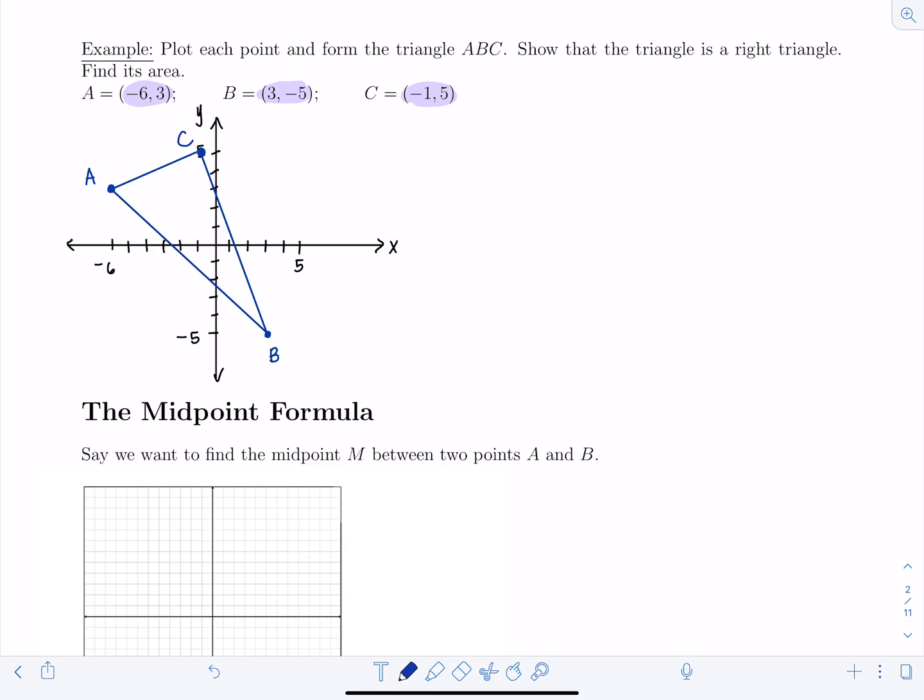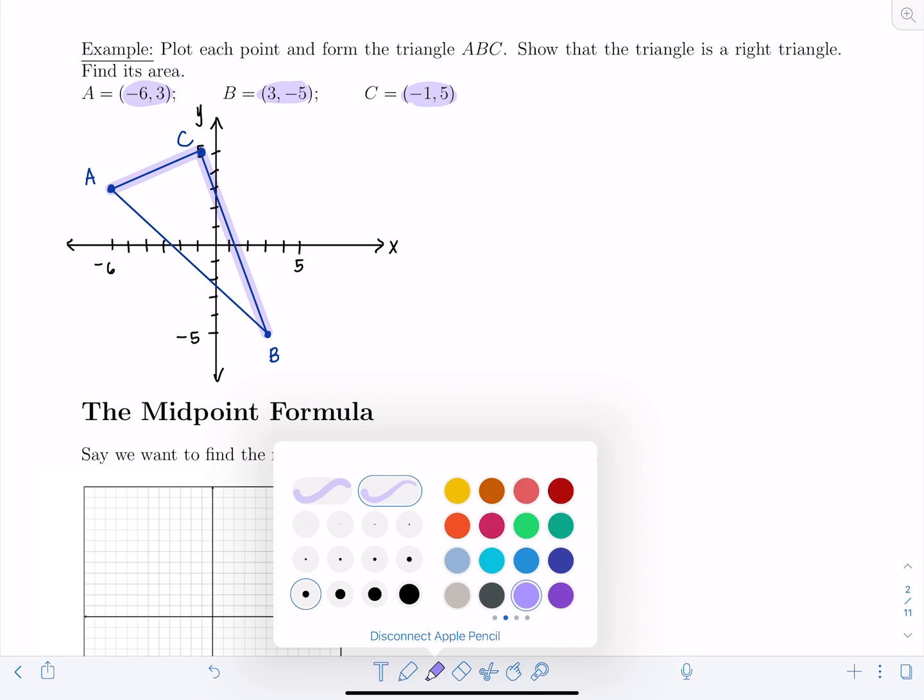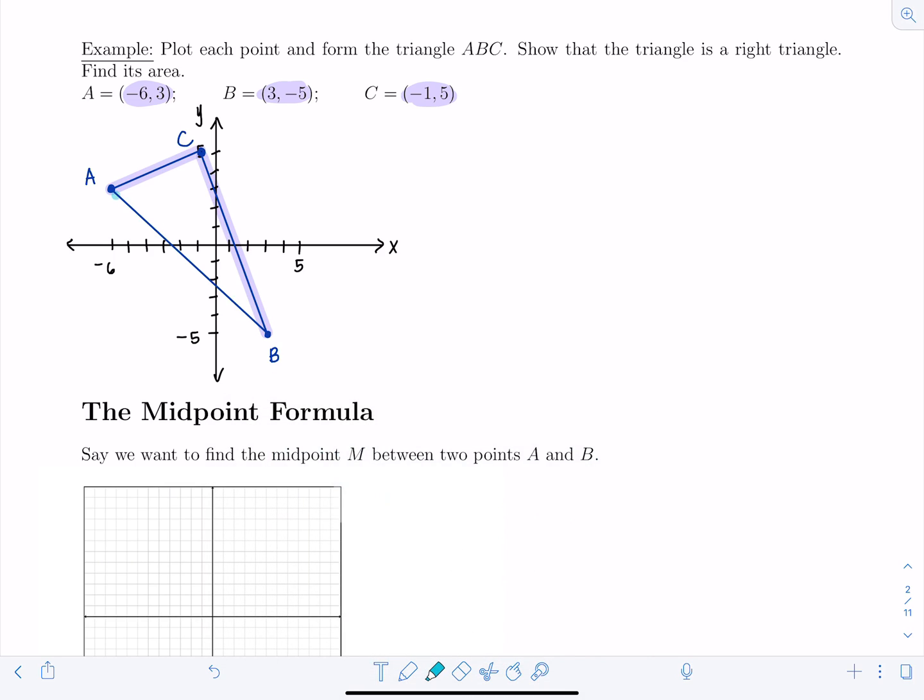And then now it's asking us to show that the triangle is a right triangle. Well we just discussed the Pythagorean theorem. So remember, Pythagorean theorem only applies for right triangles. If I can show that the sum of the squares of the lengths of the two shorter legs, which look like they're going to be AC and BC, but we'll be sure in a second. If the sum of the square of those two lengths equals the length of AB squared, then it satisfies the Pythagorean theorem, which would mean that it's a right triangle. So let's go ahead. Our job right now is to find the length of all three sides of the triangle. How am I going to do that? With my handy dandy distance formula.